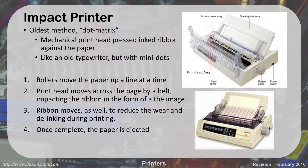The last type is called an impact printer. In the old days we called this a dot matrix printer, but we call it impact because it actually hits the paper like an old typewriter. It's a mechanical print head that presses an inked ribbon against the paper, but instead of using letter characters it uses dots to make up letters and graphics. This is another line printer — it goes line by line. As the print head goes across the belt, it impacts the ribbon with a series of dots; the ribbon also advances as it moves up so it doesn't run dry. Once done, the paper is ejected.